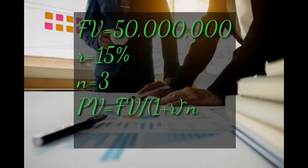From our question we are given a future value of 50 million, an interest rate of 15 percent, and n equals three years. We shall use the formula: present value equals future value divided by (1 + r) to the power of n. We are going to use this formula to discount the 50 million into present value, to determine the present worth of the 50 million.